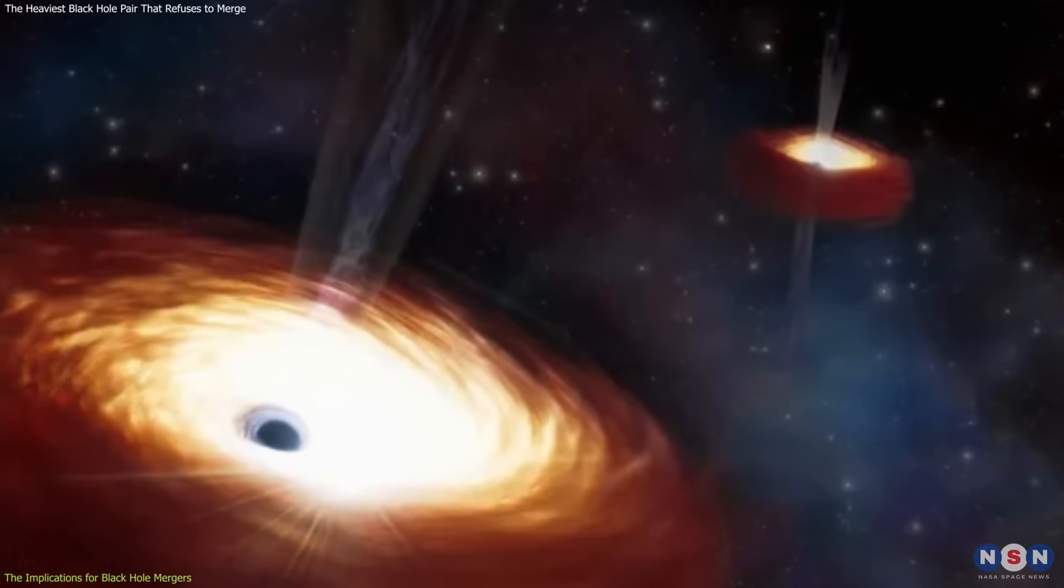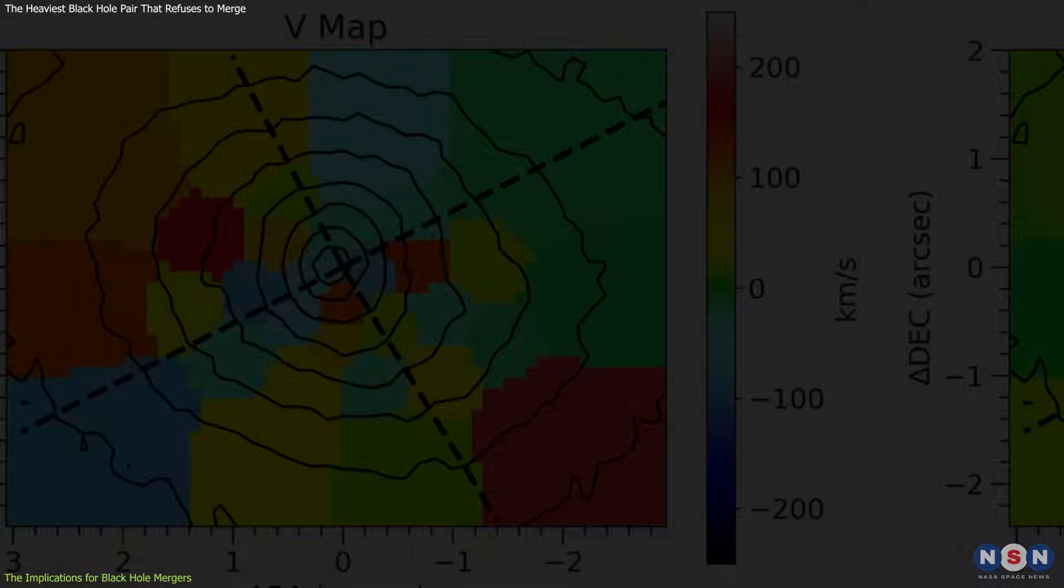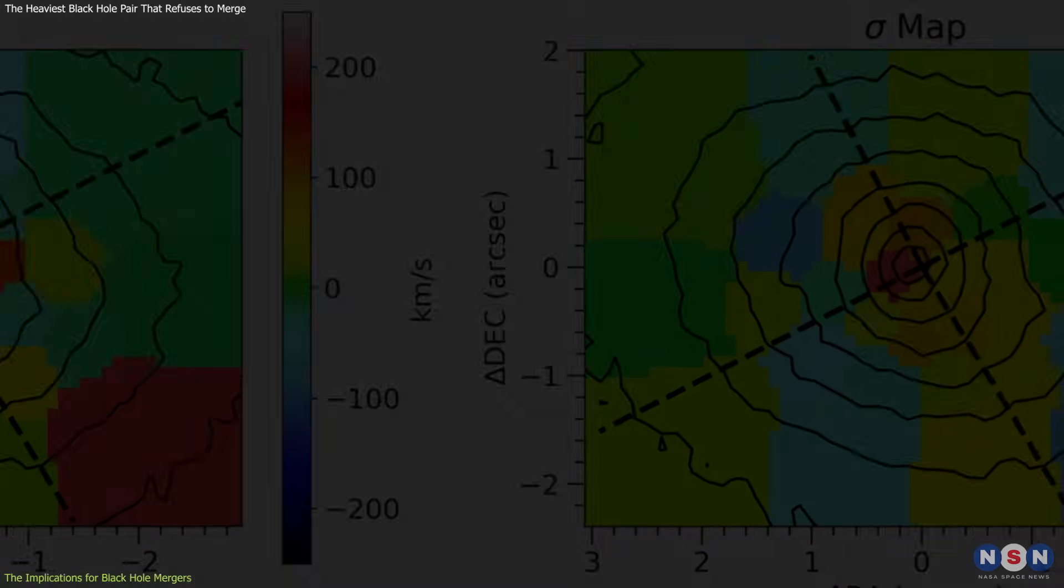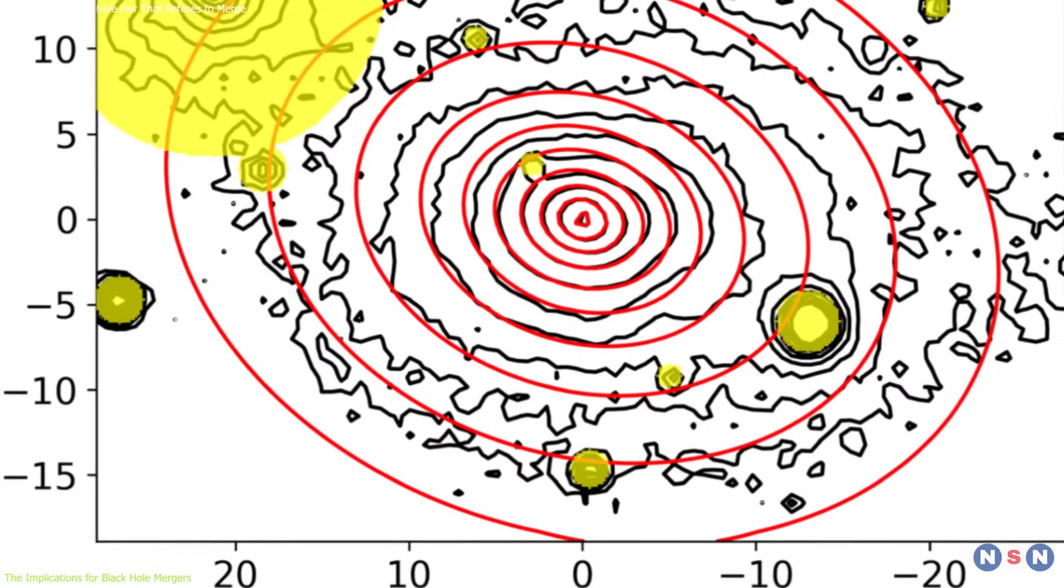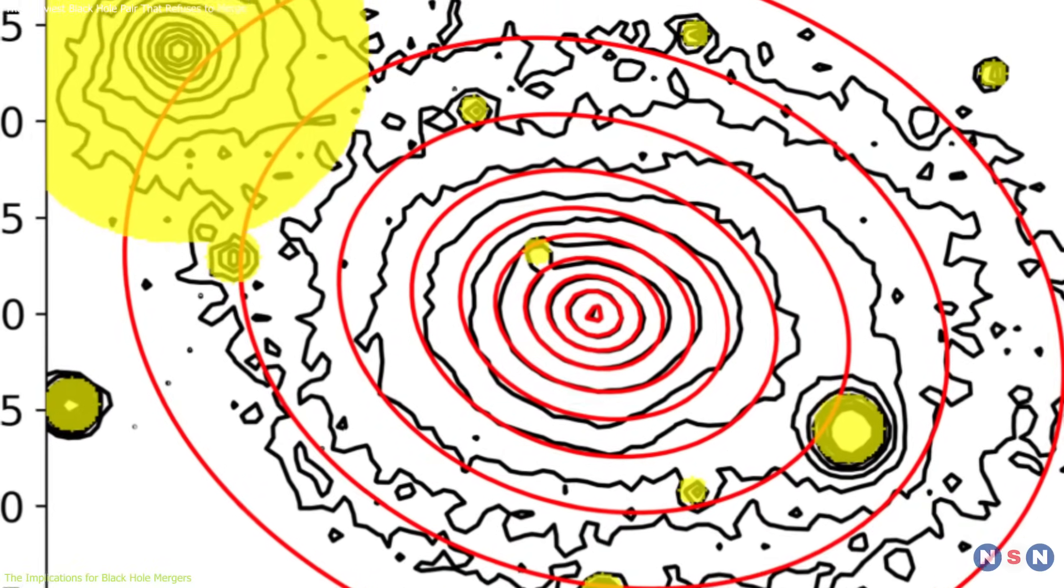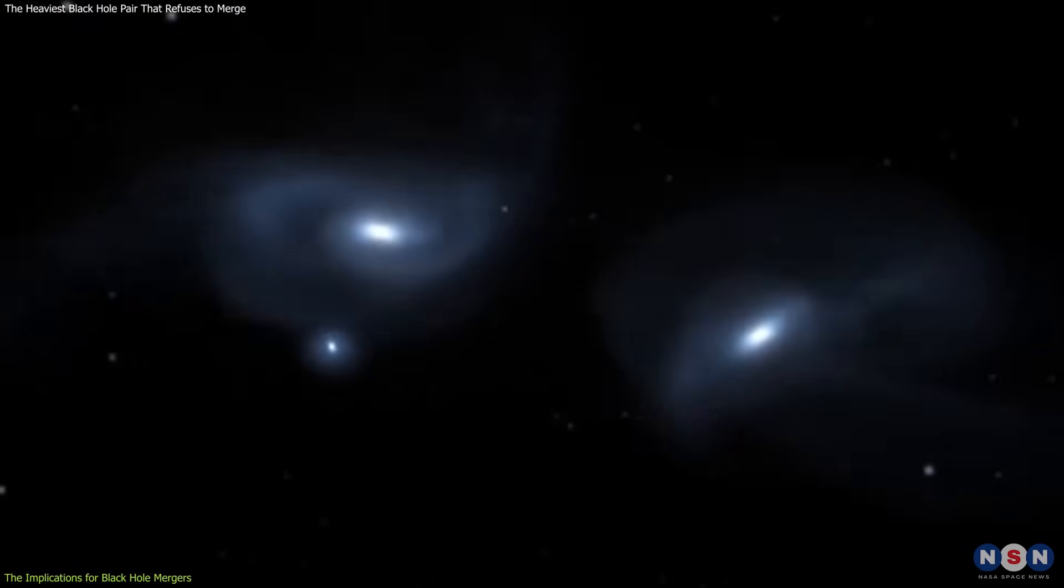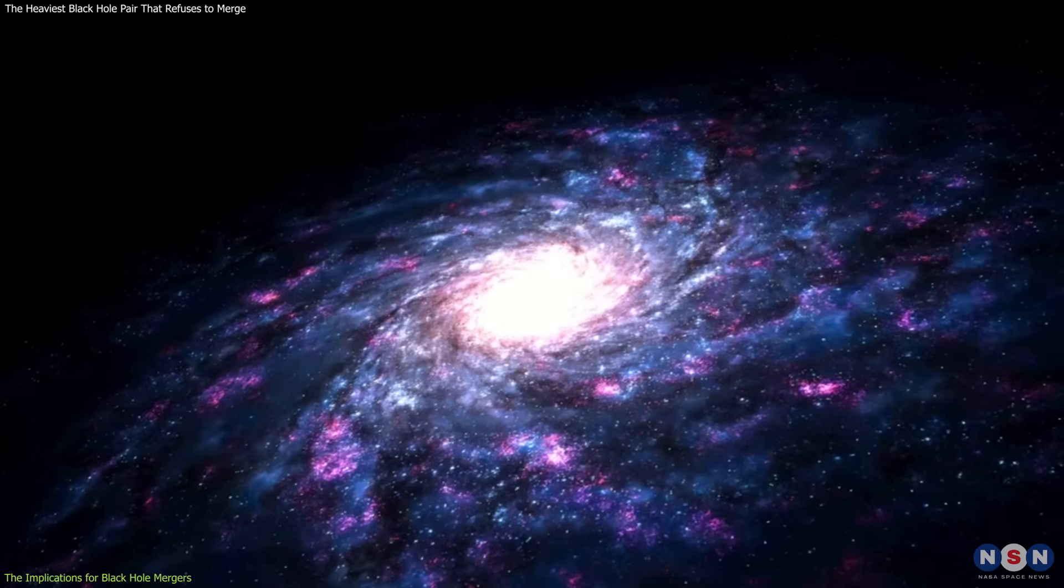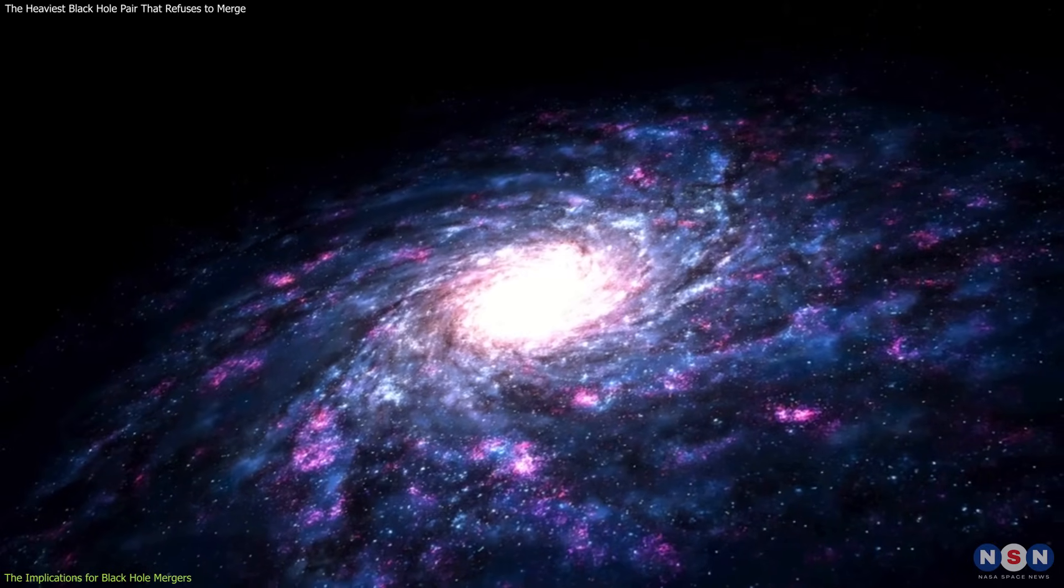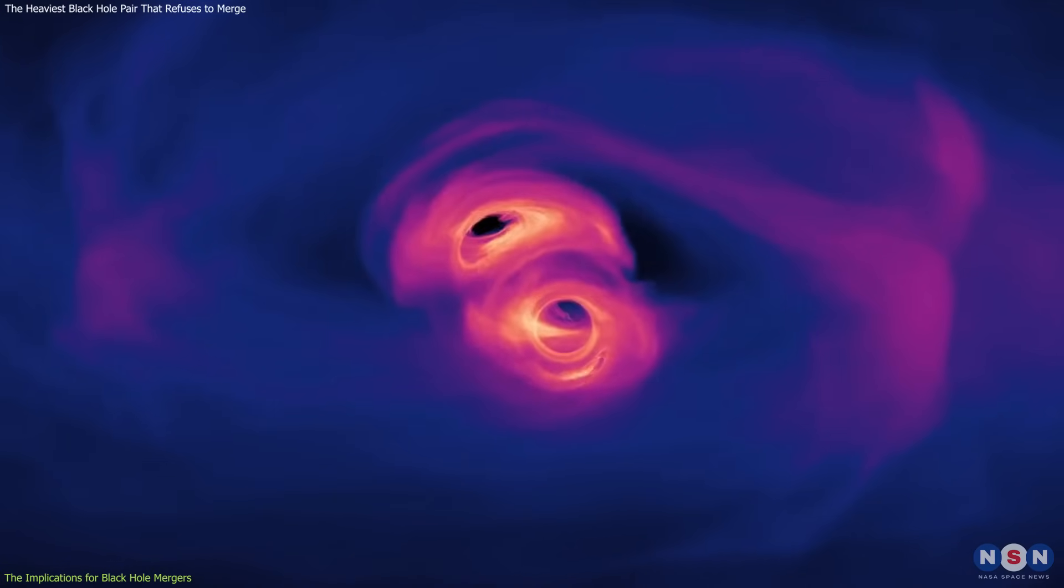This is where this black hole pair comes in. This pair is a unique and valuable case study for testing and improving our models of supermassive black hole mergers. They are in a very special environment - a collision-created fossil galaxy that resulted from a merger between two massive galaxies in the distant past. This galaxy is very old and inactive, with little star formation or gas, and it hosts only one pair of black holes.